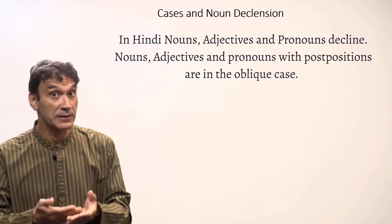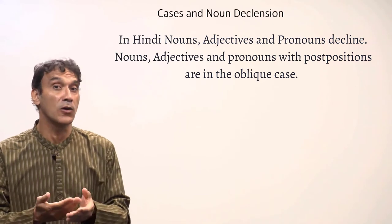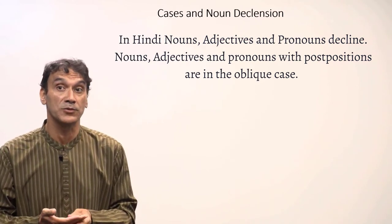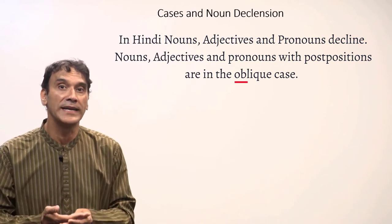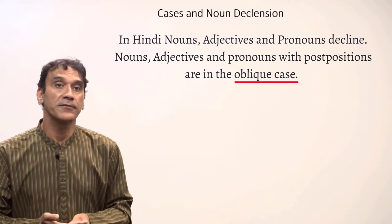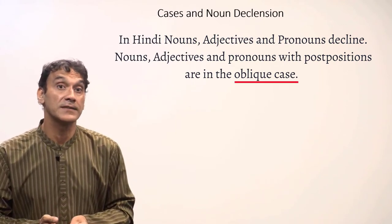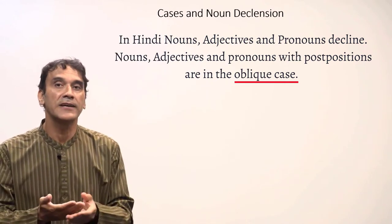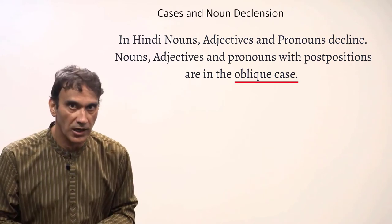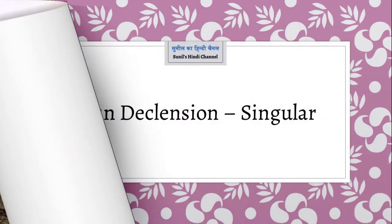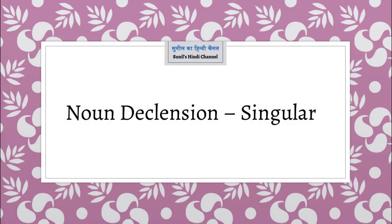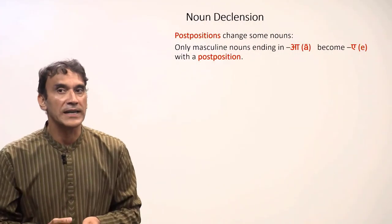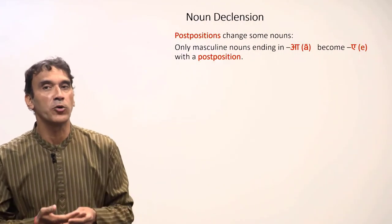In Hindi, along with pronouns, nouns and adjectives also decline. When nouns, pronouns, and adjectives come with a postposition, they are in the oblique case. The declined or changed form is called the oblique form. Let's now look at noun declension in Hindi — that is, nouns in the oblique case.